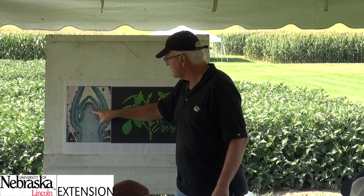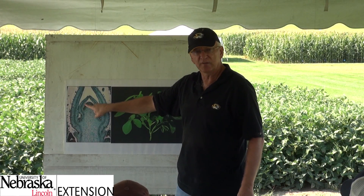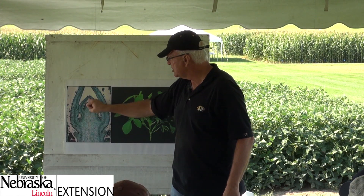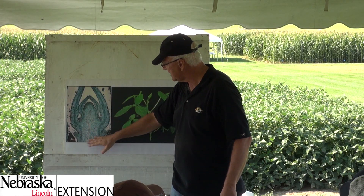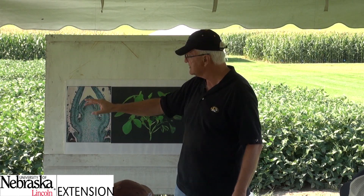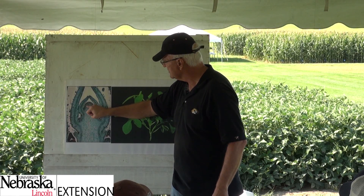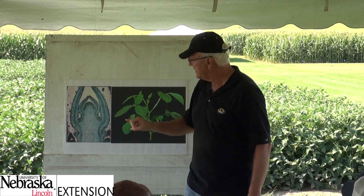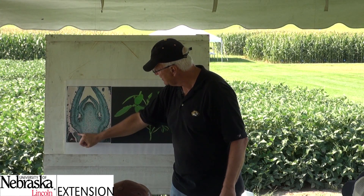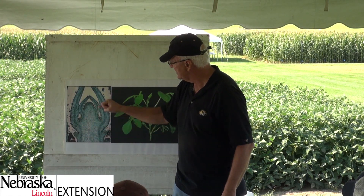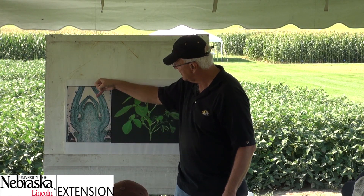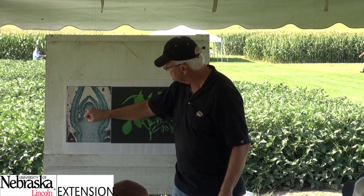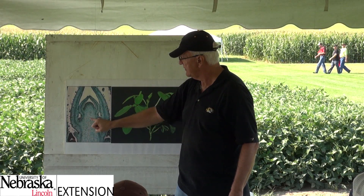This is the apical meristem — the growing point — because that's where cell division is occurring. These little cells will initiate the leaves, initiate the stem, all the xylem, phloem — all that stuff gets initiated from cells produced right here. I mentioned the axillary buds: these little dots right here are axillary buds. This is going to be a leaf; here's a leaf; there's a little bud starting to form. Soybean would have three of those sitting there.